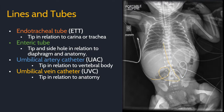The umbilical vein catheter, shown in yellow, does not dive down. It goes straight up into the ductus venosus, through the liver, into the inferior vena cava, and into the right atrium. Describe the tip in relation to the adjacent anatomy. Here, the tip is in the right atrium.